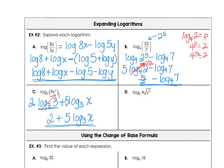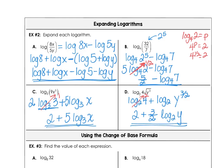In part d, we have log base 2 of 4 — you recognize that is just 2, since 2 squared is 4. Then we're adding log base 2 of y to the 3 halves power, since the square root of y cubed is y to the 3 halves power. That 3 halves comes down as a multiplier: 3 halves times log base 2 of y. So we have 2 plus 3 halves times log base 2 of y. That's simplified and expanded.